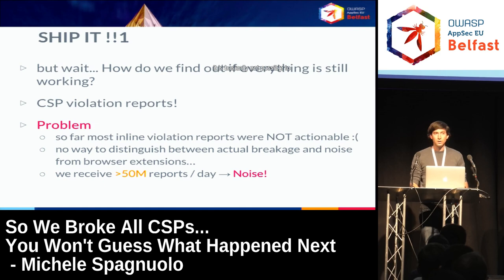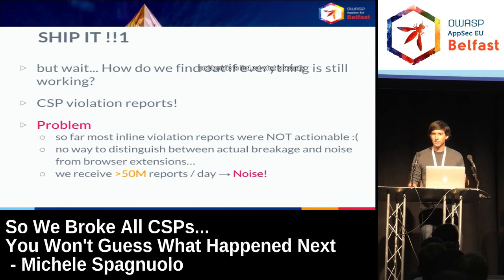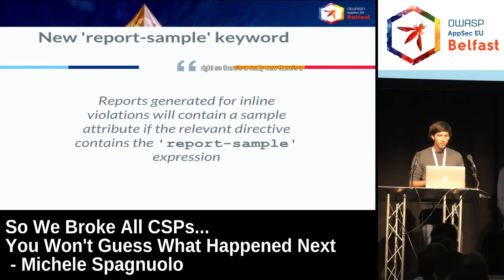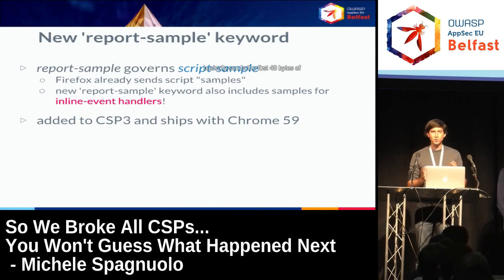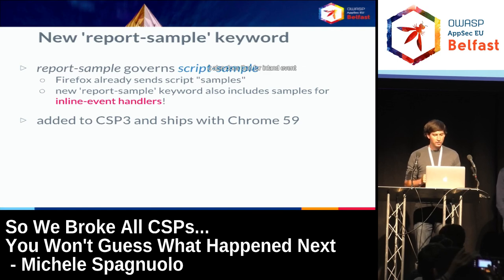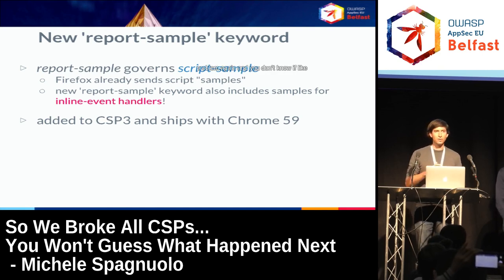It is basically not possible to distinguish between noise from browser extensions and real violations. If you get 50 million reports per day and most of it is noise, it's really hard to tell if something is actually broken. There's a really cool new keyword called 'report-sample' — similar to what Firefox already does — which sends the first 40 bytes of the script that was blocked from executing. It's already shipped in Chrome 59, and it also covers inline event handlers.